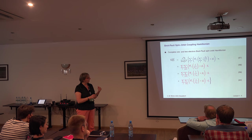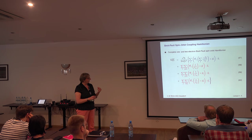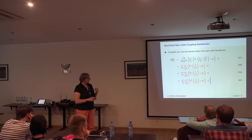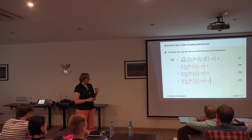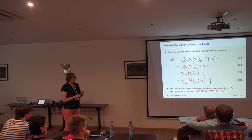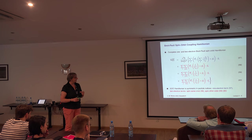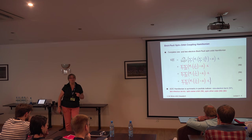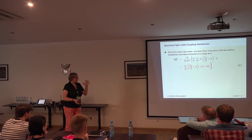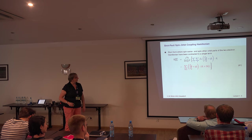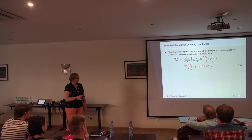The blue terms in the Breit-Pauli Hamiltonian are the derivatives of the electron-nuclear attraction potential — the Coulomb attraction — then you have the momentum of the electron and the spin. The two-electron terms include: the angular momentum of particle i interacting with the spin of particle i (the two-electron spin-same-orbit term), and the angular momentum of particle j interacting with the spin of particle i (the two-electron spin-other-orbit term). Combining these gives a Hamiltonian with one-electron terms and two-electron terms.